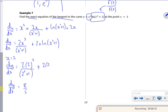Plus 2 lots of 2, log 2 squared plus 1. So that's 4 ln 5. So that's your gradient.